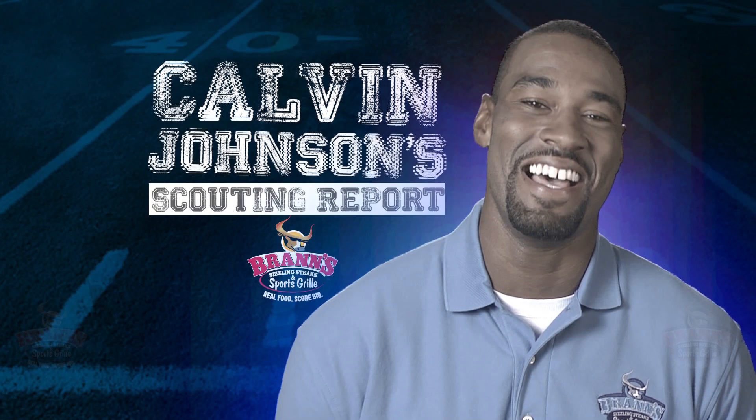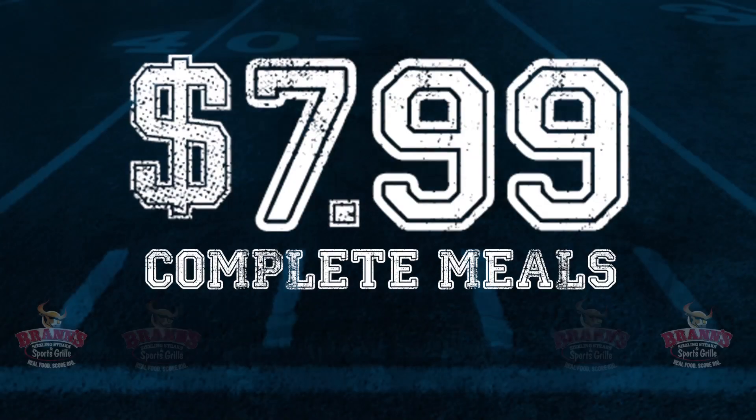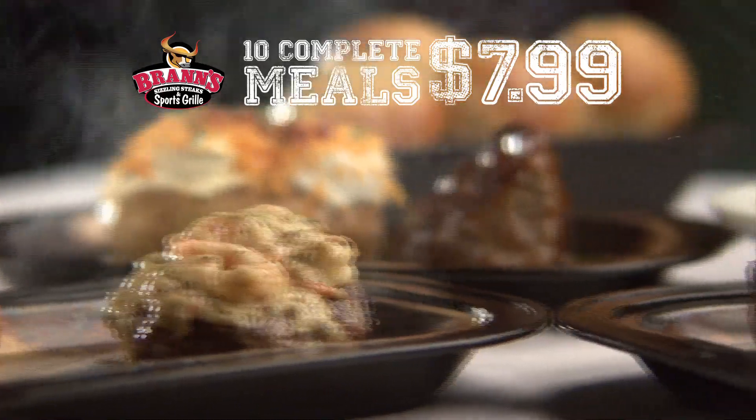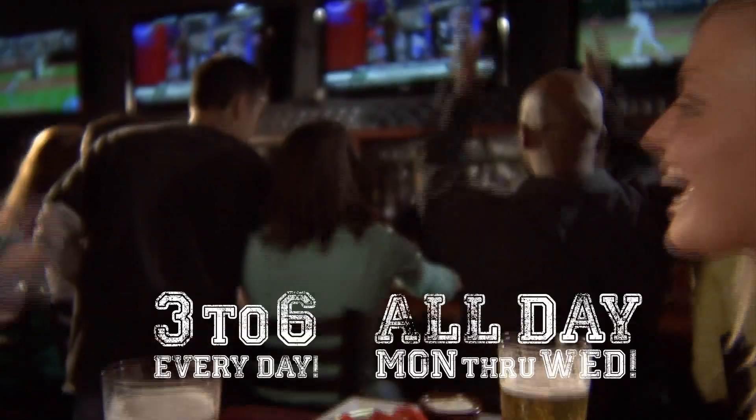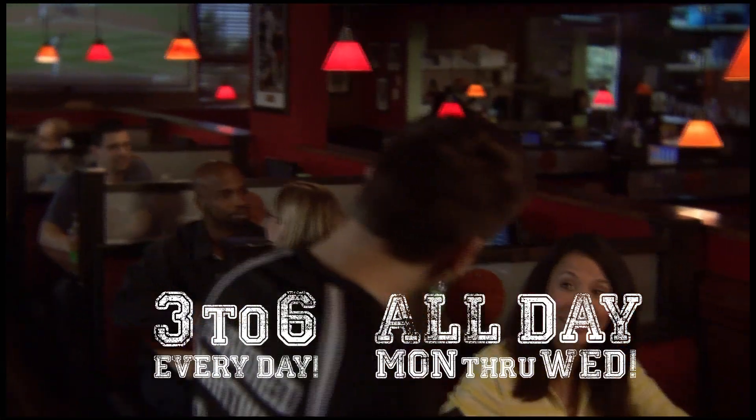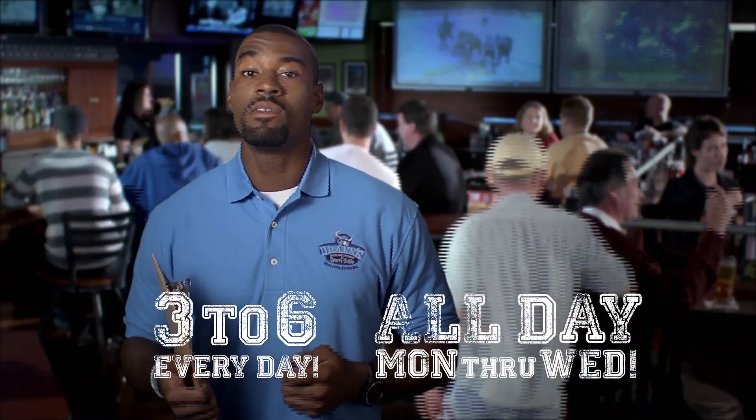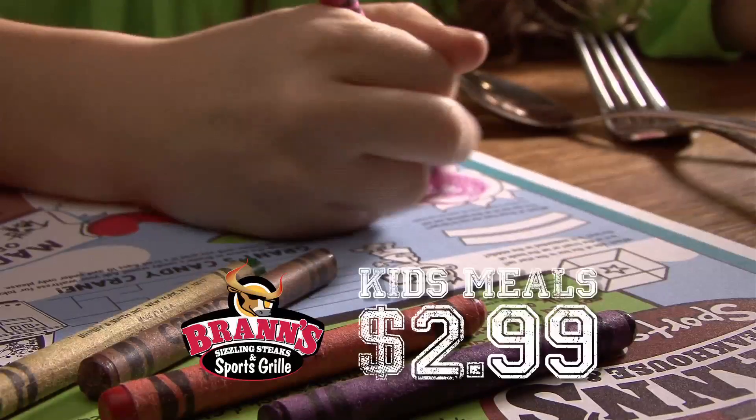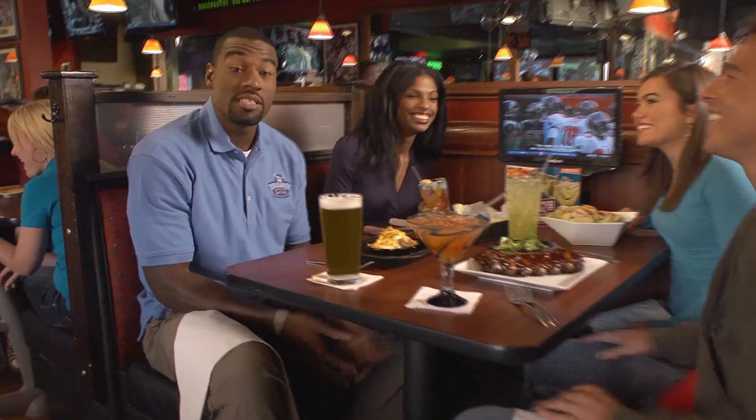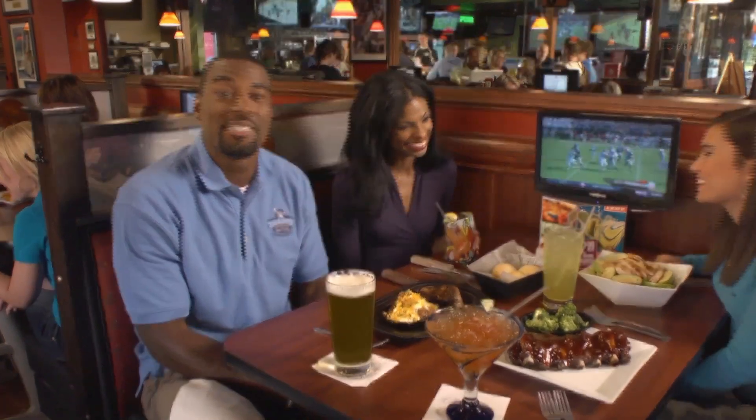I'm Detroit wide receiver Calvin Johnson, and this is my scouting report on Brands. How can anyone decide? Choice steaks, smothered chicken, barbecue ribs. Brands has over 10 amazing meals to choose from. Eat in a wildly fun sports bar or relax in a dining room, but either way, you can catch the game on 70 HDTVs. Plus, you get two sides, yeast rolls, and kids' meals for only $2.99. Seriously, Brands has so many weapons. What do they need me for? Brands. Real food? Score big.